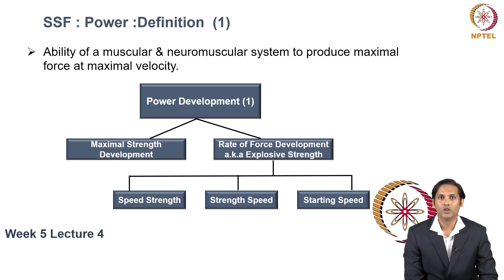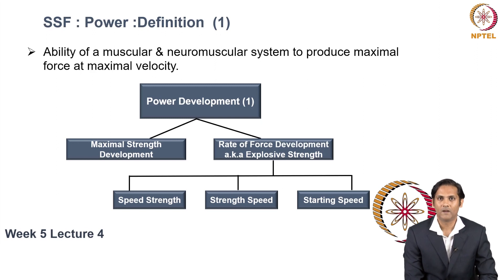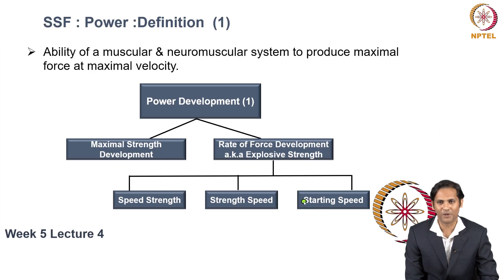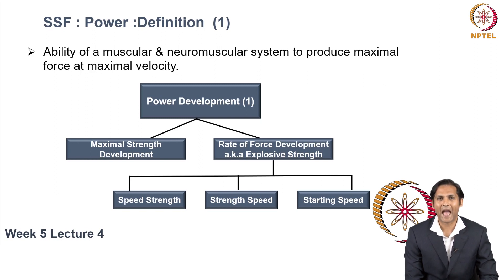Under explosive strength, you can perform speed strength, strength speed, or starting speed. These are different variations of explosive strength which differ from one another based on how much load you lift. In speed strength, you move a lighter load at a much higher velocity. In strength speed, you move a heavier or submaximal load at a slower speed. In starting speed, you move at a much higher load using your body weight as the external load. Each of these abilities emphasizes moving as fast as possible.